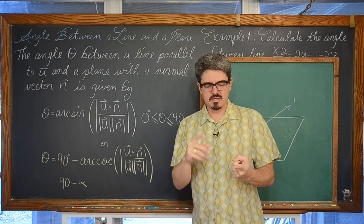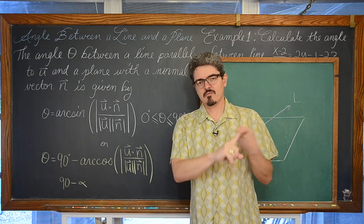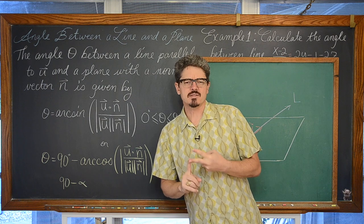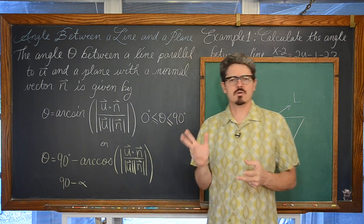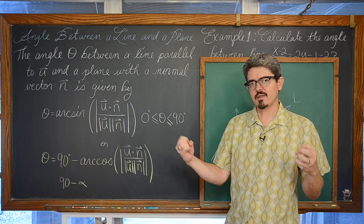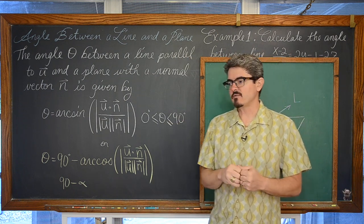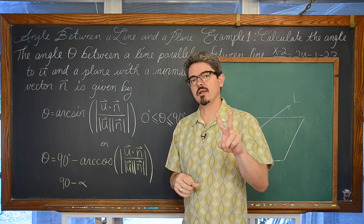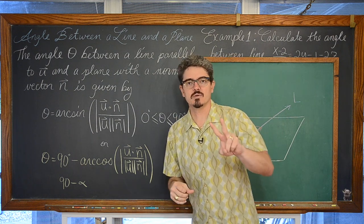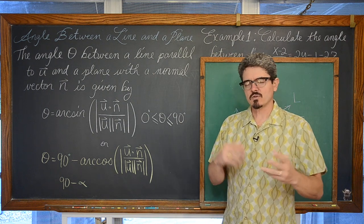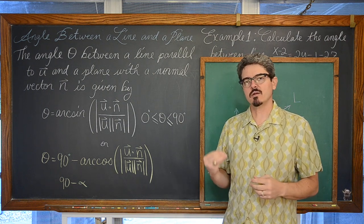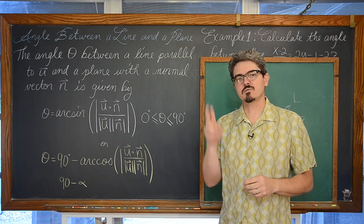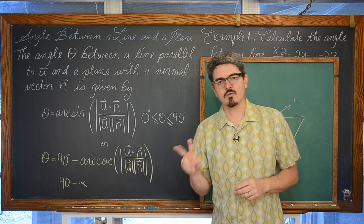Our first example will have the equation of our plane in Cartesian format and our line in three-space — the most straightforward problem because we can just pull the normal vector out of the Cartesian equation. Our second example has the plane given in vector format, so we'll take out two non-collinear parallel directional vectors and find their cross product to get the normal vector to the plane.